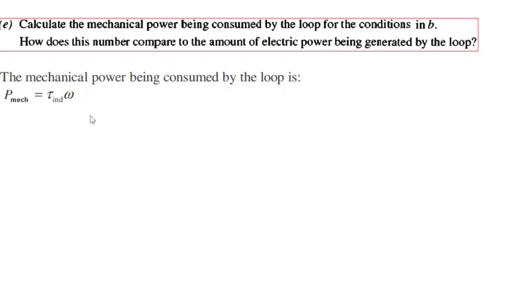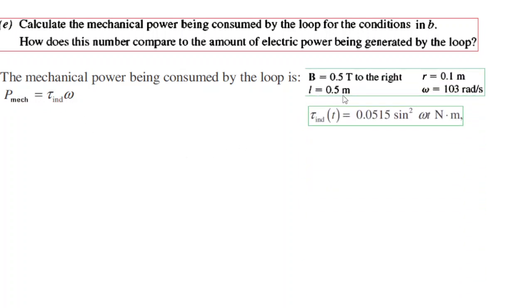Calculate the mechanical power being consumed by the loop and how does this number compare to the amount of electric power. Now the mechanical power is the formula shown here. We have both t induced and omega we know. So omega from here and t induced we calculated.